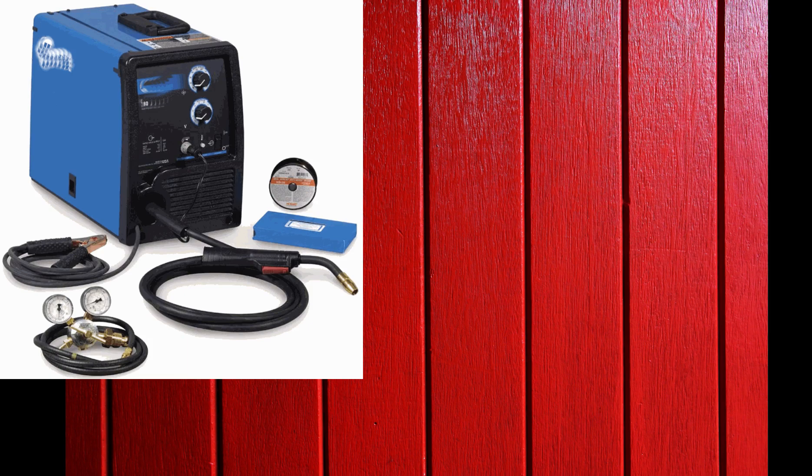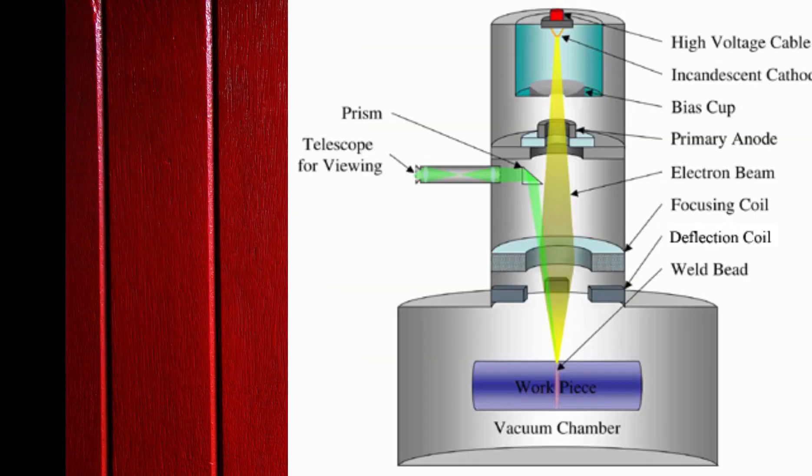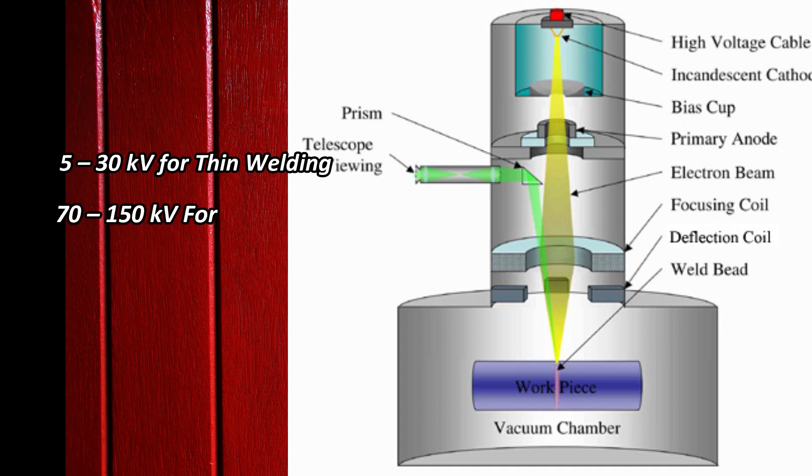The first equipment is the power supply. This process uses a power source to supply continuous beam of electrons for the welding process. The voltage range is about 5 to 30 kilovolts for low voltage equipment or thin welding, and 70 to 150 kilovolts for high voltage equipment or thick welding.